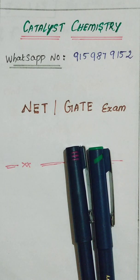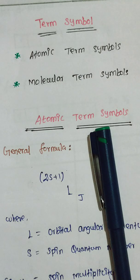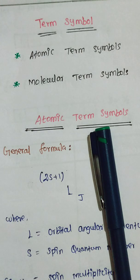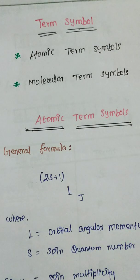Today I am going to discuss about the topic called term symbols. There are two kinds of term symbols: atomic term symbols and molecular term symbols. Term symbols carry several marks — from the CSR point, a total of six marks, or four marks, or two marks. So within a few minutes we will have easier answers to score. In this video I am going to discuss about atomic term symbols, and in the next video I will cover molecular term symbols.